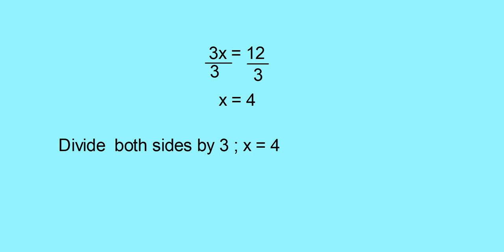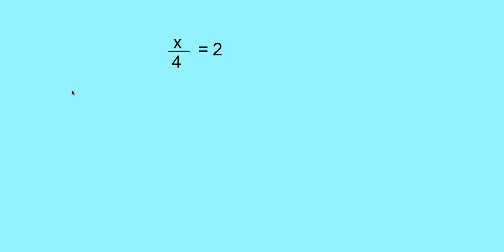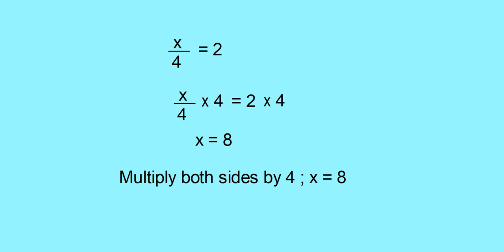You can write the steps and solution as: divide both sides by 3, x is equal to 4. Consider another equation: x by 4 is equal to 2. What will be your first step to separate x? Since it is divided by 4, you have to multiply both sides by 4. So you can write: x by 4 into 4 is equal to 2 into 4. That is, x is equal to 8. The step is: multiply both sides by 4. x is equal to 8.